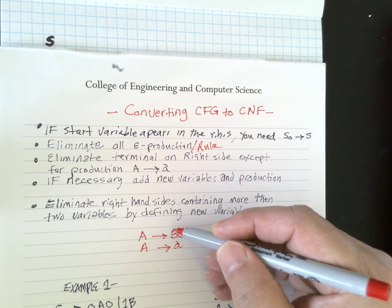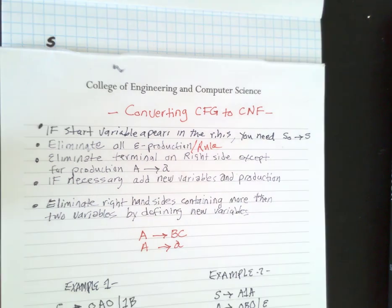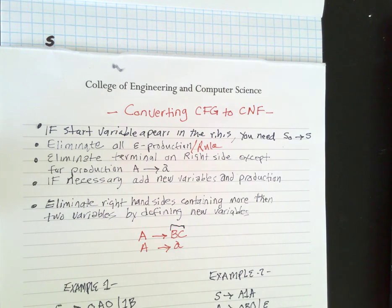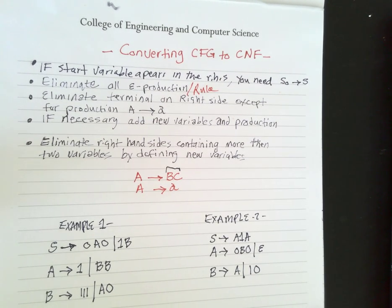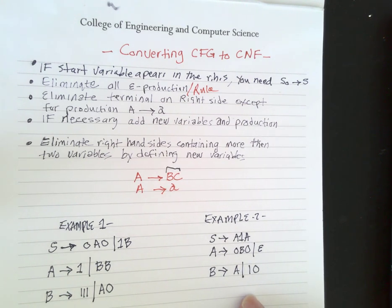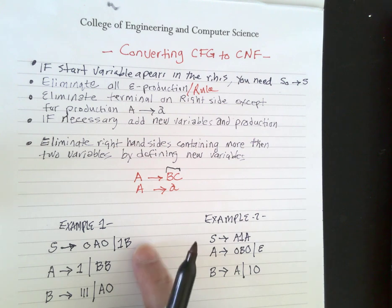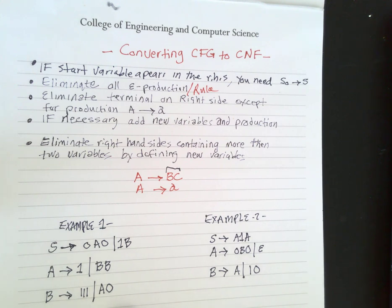We're going to look at two examples in this video. Example one doesn't have an epsilon production. Example two has an epsilon production rule. So we'll look at these two examples and see how we can convert them going from a context-free grammar to Chomsky Normal Form.